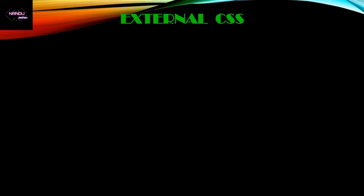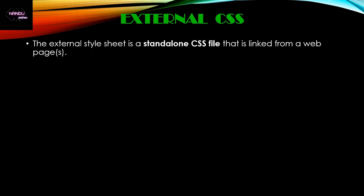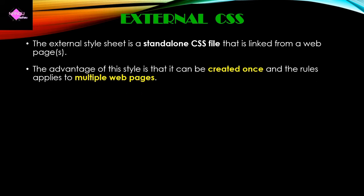The last type is External CSS. An external CSS is a standalone CSS file that is linked to each and every web page where you want to apply styles. The advantage of this method is that it is created only once and can be applied multiple times to multiple web pages — unlike inline CSS (single statement) or internal CSS (single web page only).